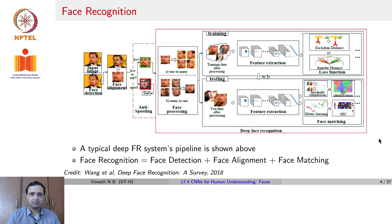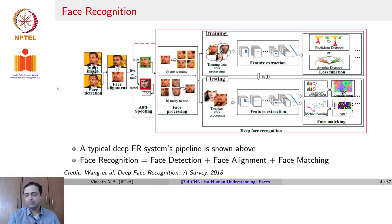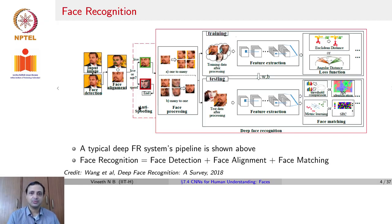A standard face recognition pipeline, as used when deep learning is employed, starts with an input image. You first perform face detection to isolate faces from the image. Once face detection is done, there are preprocessing tasks before you give the cropped face for a recognition task. The first task is to align the face to a set of predefined geometry. The second task, which is optional depending on the application, is to check whether the image is a spoof or live — did someone hold up a photo to the camera, or is it really their face? If it is a spoof, the pipeline concludes there; if not, we go on to the next stage.